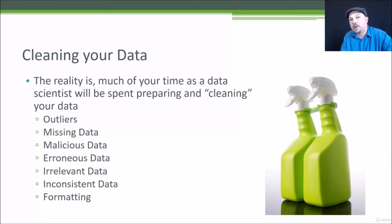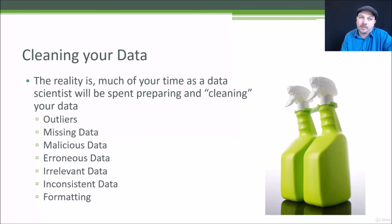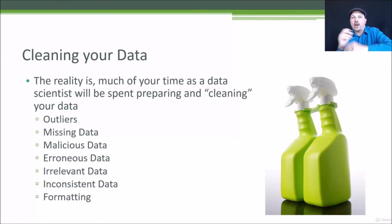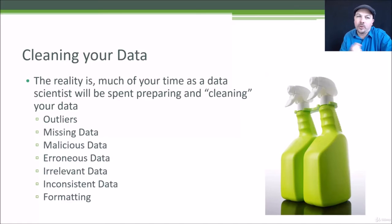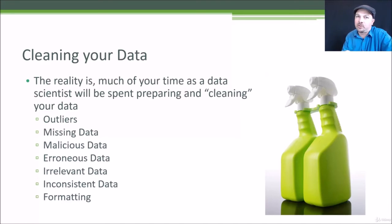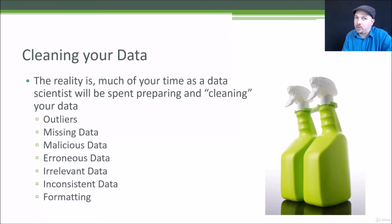Malicious data: there might be people trying to game or cheat your system, and you don't want those people getting away with it. For example, in a recommender system, there could be people trying to fabricate behavior data just to promote their new item. You need to be on the lookout for shilling attacks or other types of attacks on your input data, filter them out, and don't let them win.